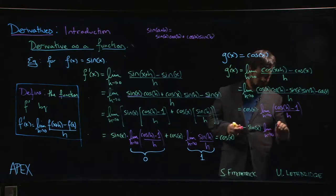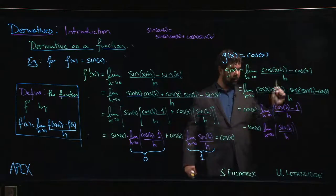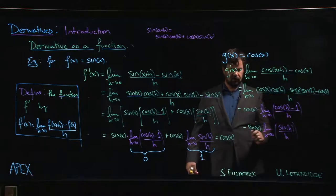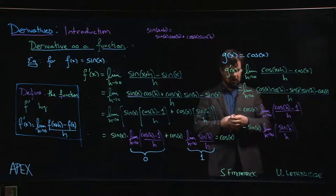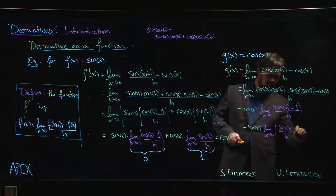And just like last time, this limit is zero, this limit is one, and we have our answer. The derivative of cosine? Well, it's not quite sine—it's negative sine.